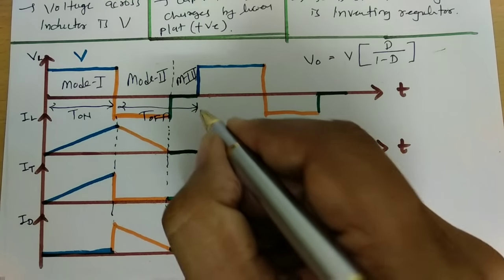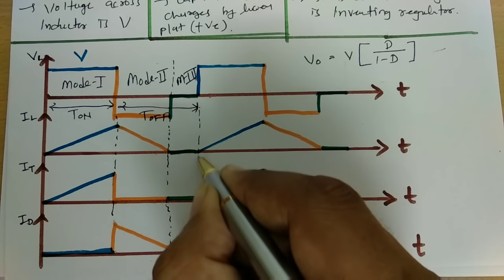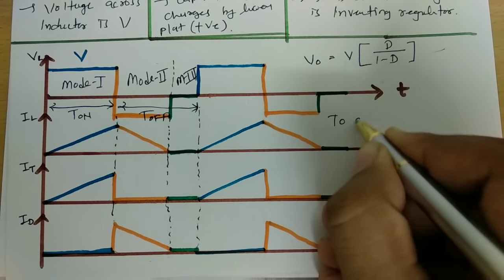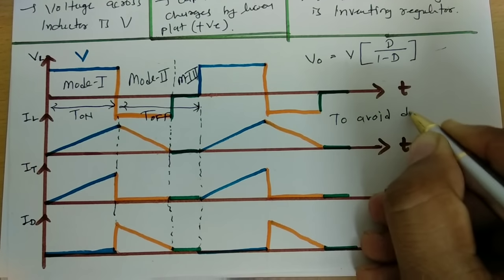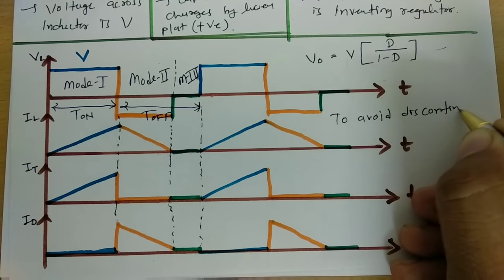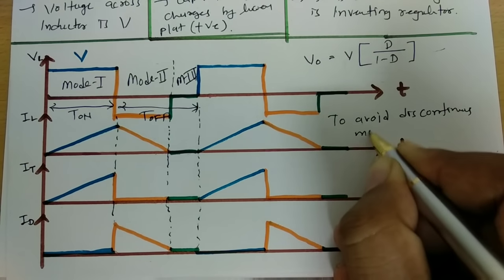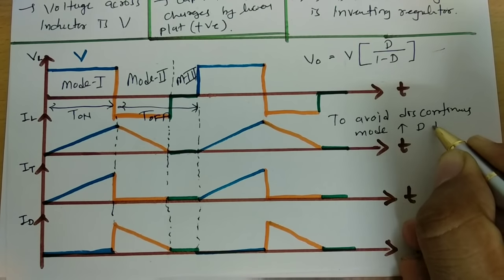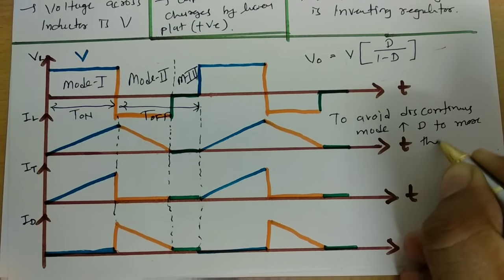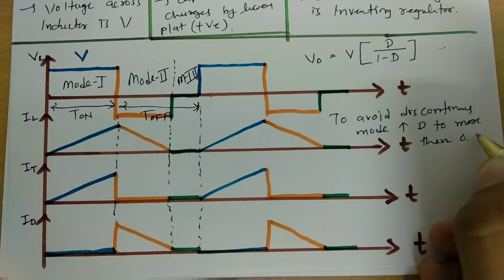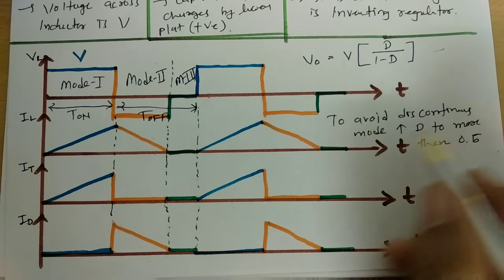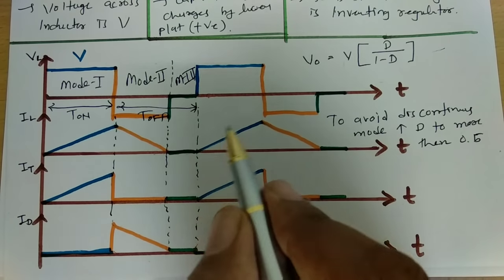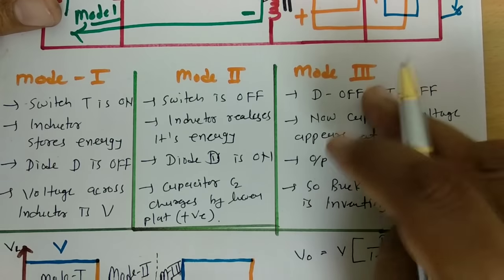To avoid discontinuous mode and move to continuous mode, increase the duty cycle D to more than 0.5. If you increase the duty cycle to more than 0.5, one can avoid discontinuous mode. That is what mode three operation is about.